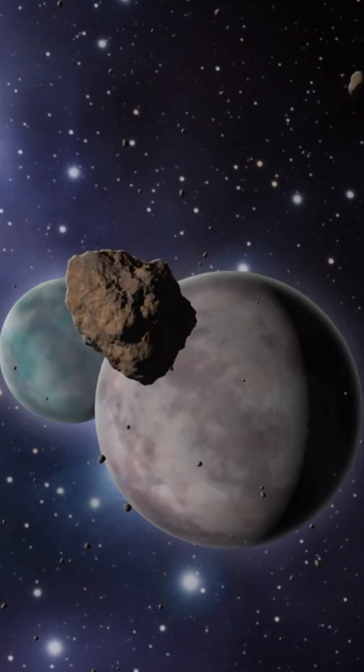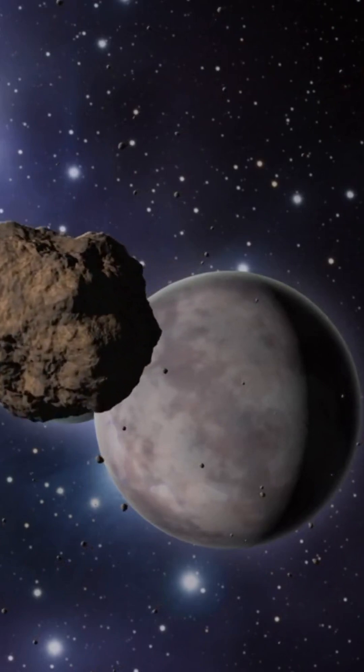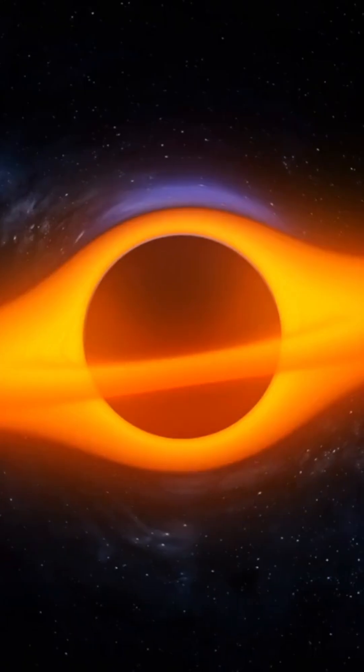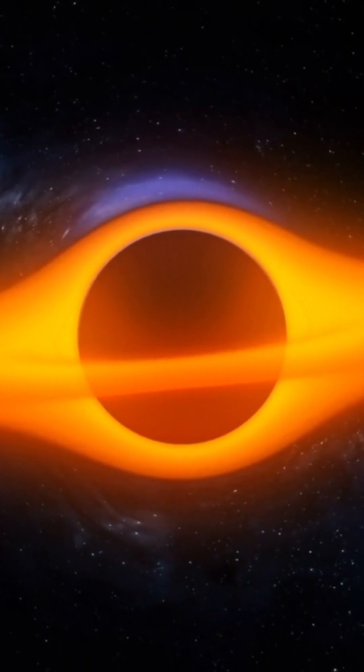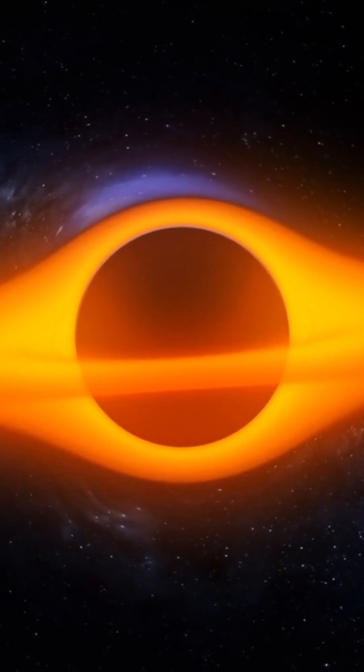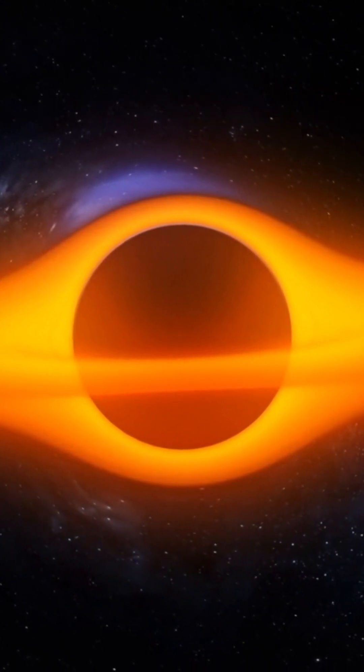However, unlike our primary moon, this secondary moon is not a permanent fixture in our orbit. It became trapped in Earth's gravitational pull over two millennia ago and is predicted to break free from Earth's orbit by approximately the year 3700.